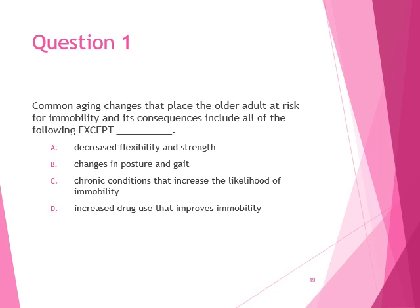A review question: common aging changes that place older adults at risk for immobility include decreased flexibility and strength and changes in posture and gait. The correct answer is D. Older adults typically have one or more chronic diseases—such as COPD, hypertension, and diabetes—that increase the likelihood of immobilization.